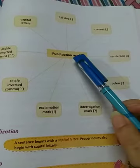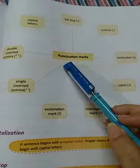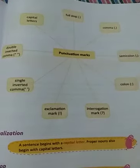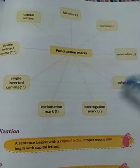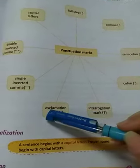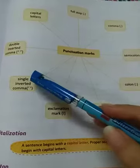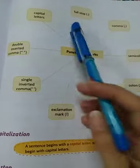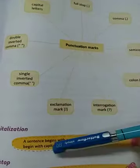Now what all are included in punctuation marks? Full stop, comma, semicolon, colon, interrogation mark, exclamation mark, single inverted comma, double inverted comma and capital letters.